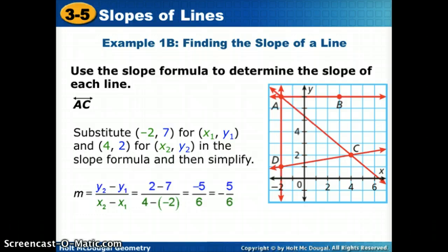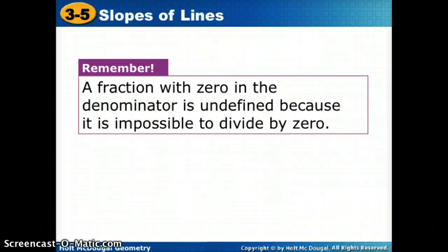So now, let's talk about different types of slope. Remember that a fraction with the 0 in the denominator is undefined because it's impossible to divide by 0. So if we had come up with a slope of 2 over 0, we would call that undefined because we can't have a 0 on the bottom.